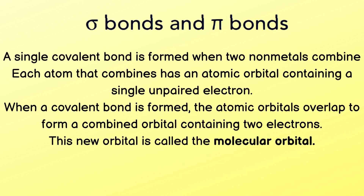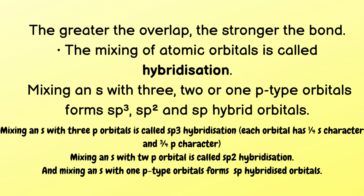The next sub-topic is sigma bonds and pi bonds. A single covalent bond is formed when two non-metals combine, each with an atomic orbital containing a single unpaired electron. When a covalent bond forms, the atomic orbitals overlap to form a combined molecular orbital containing two electrons. The greater the overlap, the stronger the bond. This mixing of atomic orbitals is called hybridization. Mixing an s orbital with three p orbitals is called sp³ hybridization.